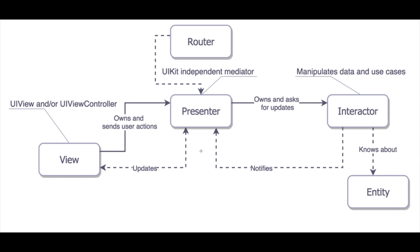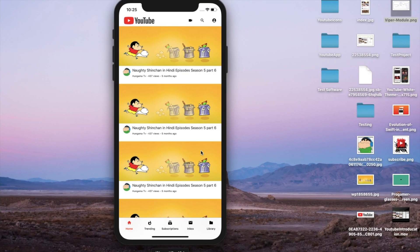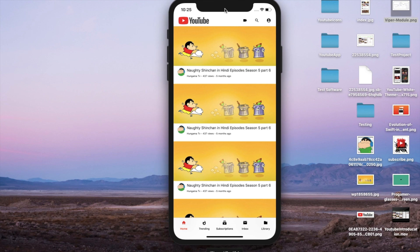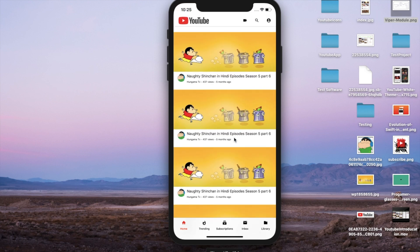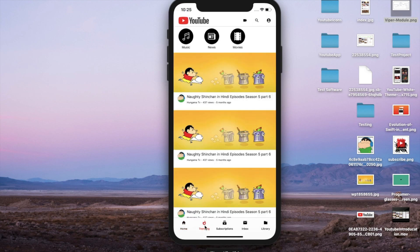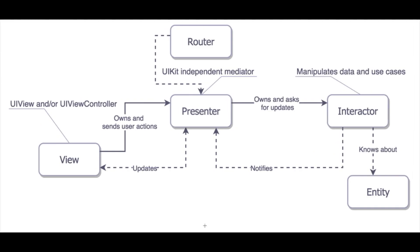The backbone of VIPER we say is the Presenter. Taking the example of our YouTube app — the content visible to the user is called the View. If we click on anything, like the trending section, it is the user interaction with the application. The View just tells the Presenter that the user has clicked on the trending button.